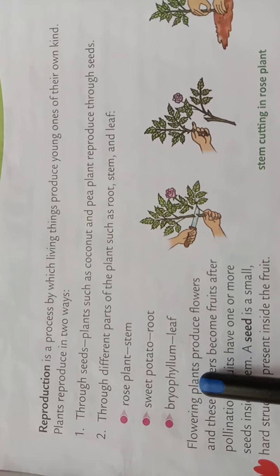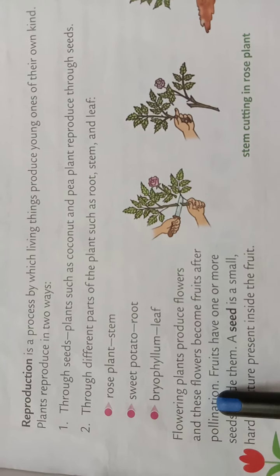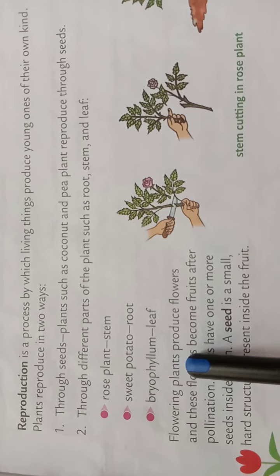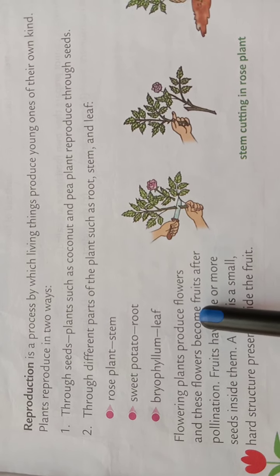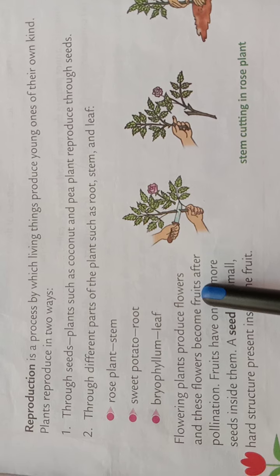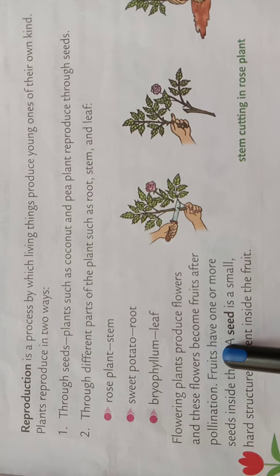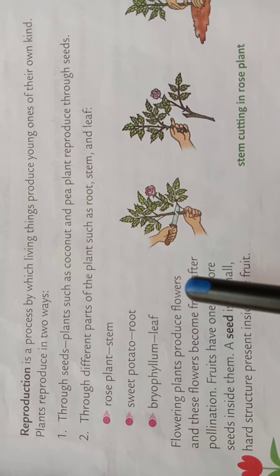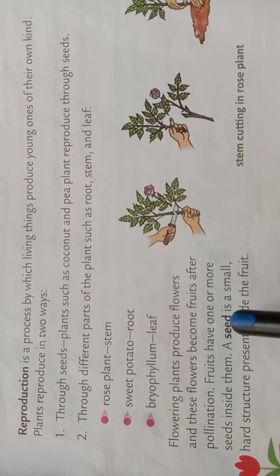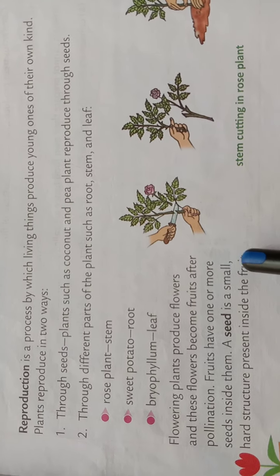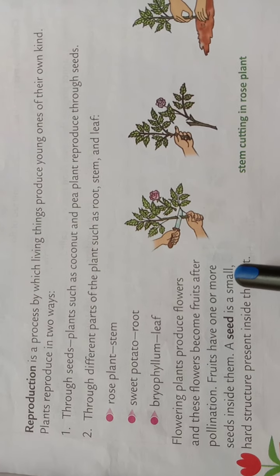Flowering plants produce flowers and these flowers become fruits after pollination. Fruits have one or more seeds inside them. A seed is a small hard structure present inside the fruit.